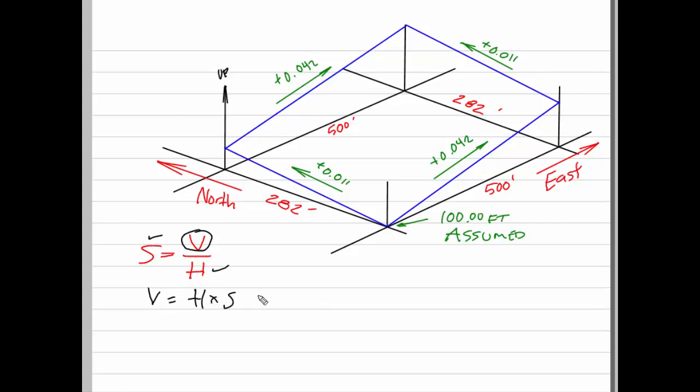So let's do this for the east-west sides. We know that the horizontal distance is 500 feet, we multiply that by a positive 0.042 slope, and the elevation change will be 21.00 feet. That will be true both for the south edge of this slab and for the north edge, because the slopes are identical.